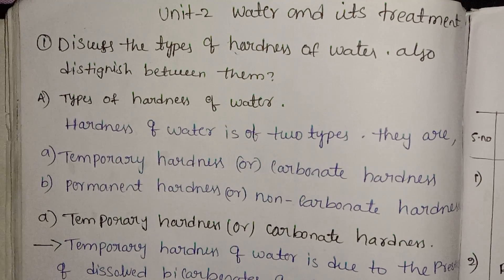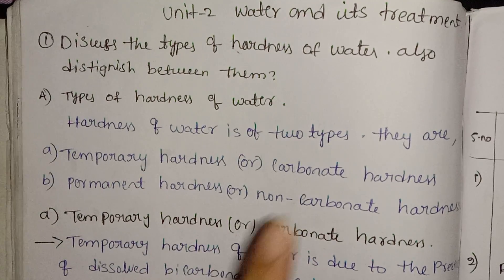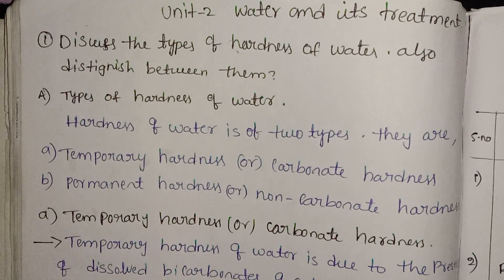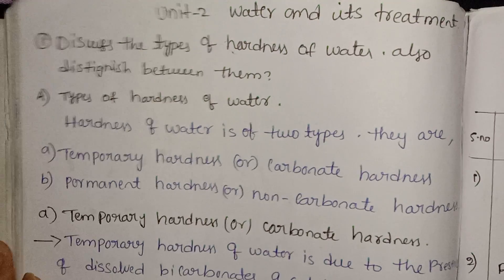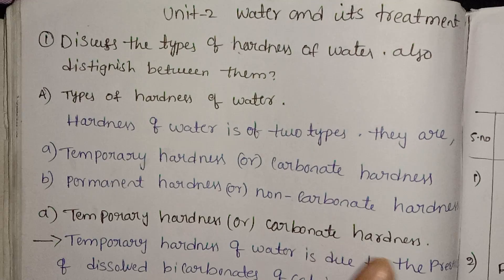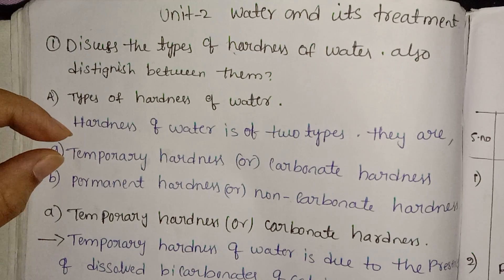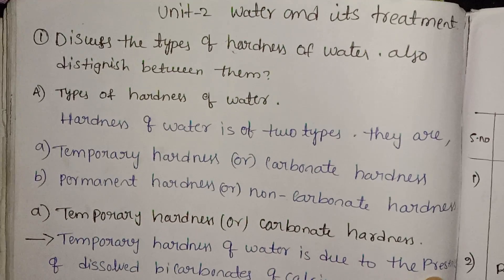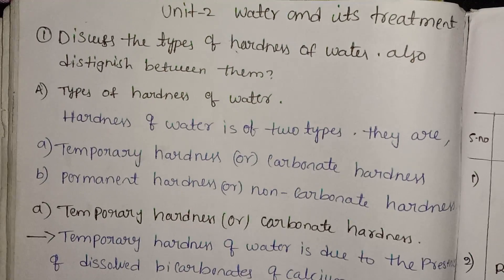The first type is temporary hardness, also called carbonate hardness. Temporary hardness of water is due to the presence of dissolved bicarbonates of calcium, magnesium, and other heavy metals.